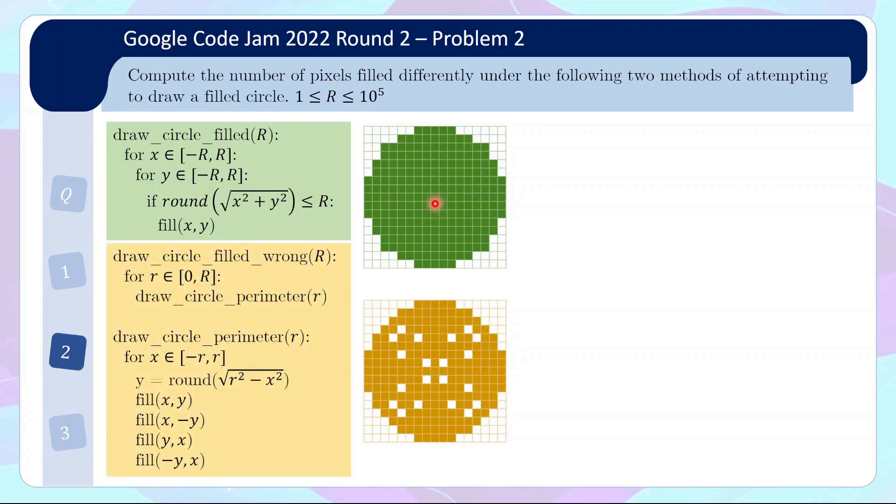The other method which I'll call the yellow method is basically if you want to draw a filled circle of radius R, you will draw for each little r from 0 to capital R, you will draw a ring of radius small r. So how do you draw a ring? If you draw a ring of radius small r, for a fixed value of x, you'll calculate y equals to rounded value of sqrt(r^2 - x^2). Once you have the y value, you fill x,y, but you also fill the mirror image x,-y, and you also fill the diagonal mirror image y,x, and then you also fill the mirror image of that which is -y,x.